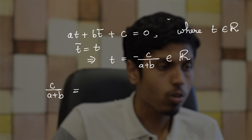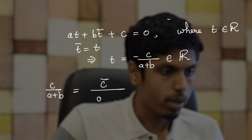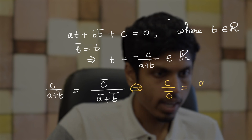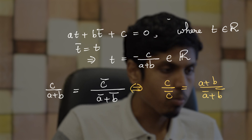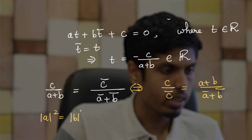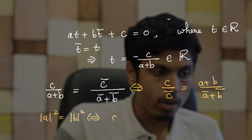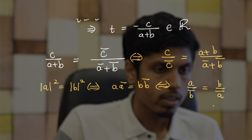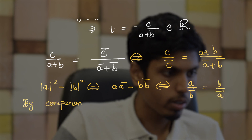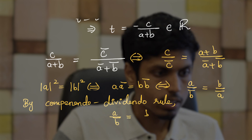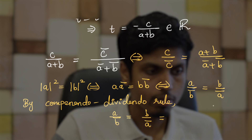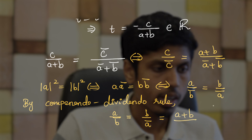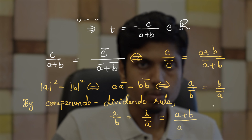A number is real if and only if it equals its conjugate, so we need c/(a + b) = c̄/(ā + b̄), or equivalently c/c̄ = (a + b)/(ā + b̄). Since |a| = |b|, we have |a|² = |b|², meaning aā = bb̄, which is equivalent to a/b̄ = b/ā. By the componendo-dividendo rule, this ratio also equals (a + b)/(ā + b̄).